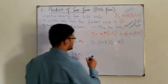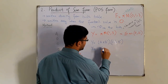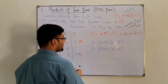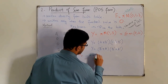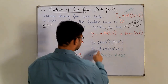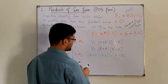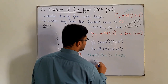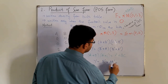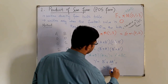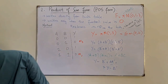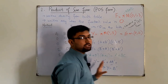Rearranging, y equals (b complement + a)(b complement + a complement). Applying the distributive property where b complement plays the role of a: y equals b complement + a·a complement. Since a·a complement equals zero, the function simplifies to y equals b complement, which you can verify from the truth table.